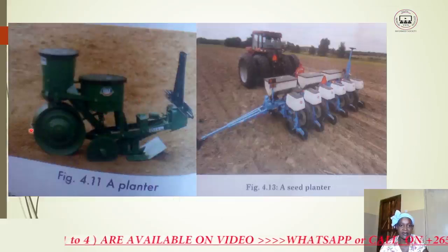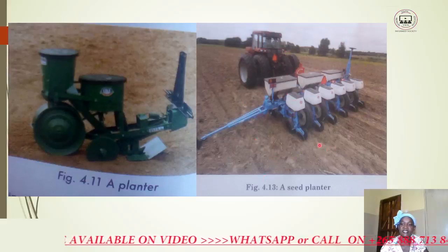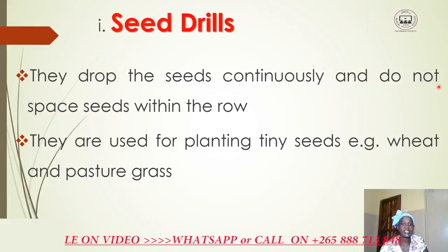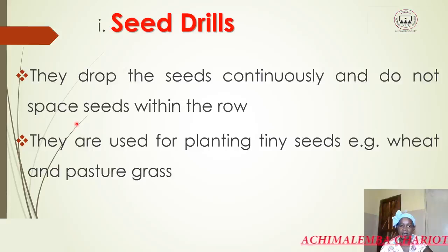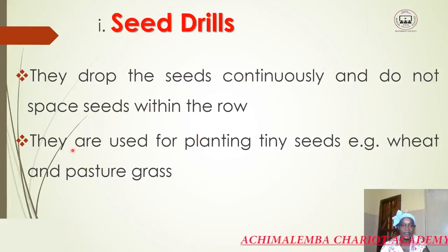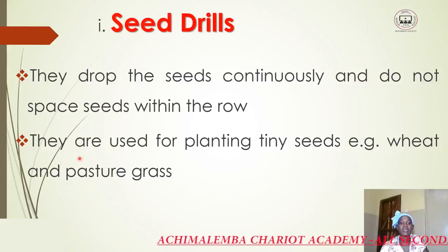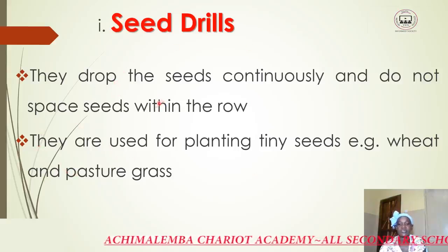This one is the precision seed planter. Seed drills drop the seed continuously and do not space seeds within the row — they just drop the seeds continuously without maintaining spacing. They are used for planting tiny seeds; those tiny seeds we would normally plant by broadcasting can also be planted using seed drills.